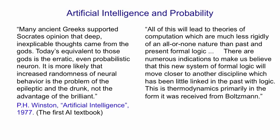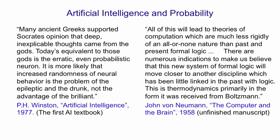Here's an alternative view: "All of this will lead to theories of computation which are much less rigidly of an all-or-none nature than past and present formal logic. There are numerous indications to make us believe that this new system of formal logic will move closer to another discipline which has been little linked in the past with logic. This is thermodynamics, primarily in the form it was received from Boltzmann." That was written by John von Neumann in 1957, part of the unfinished manuscript for his book on the computer and the brain. I think if von Neumann had lived, the history of artificial intelligence might have been somewhat different.